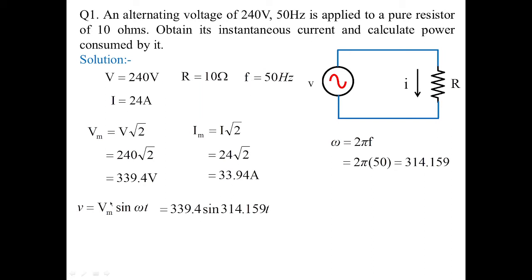The instantaneous current is i = Im sin(ωt). Since it is a resistor and voltage and current are in phase, i = 33.94 sin(314.159t). This is the instantaneous value of current we need to calculate.